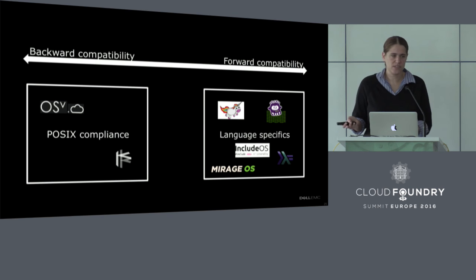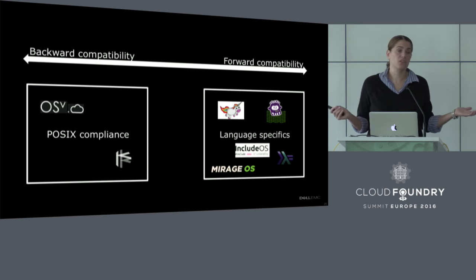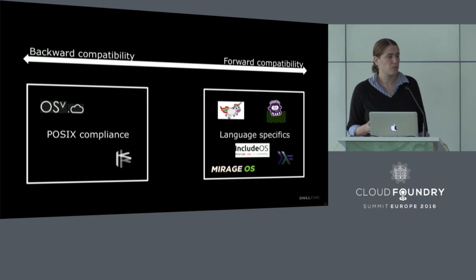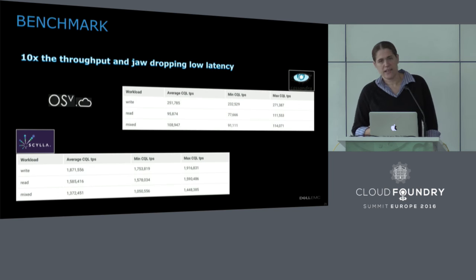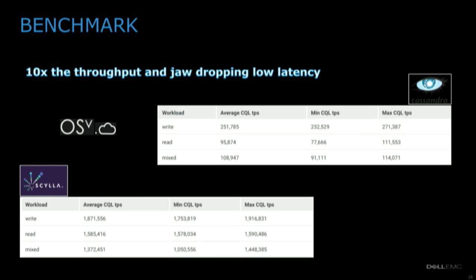For example, MirageOS — the OS from the company Docker bought — requires you to run on OCaml. Here's an example of performance: a company called Cloudius in Israel started from Unikernel and pivoted, creating a database called ScyllaDB. They took Cassandra and rewrote it on Unikernel. The result is 10 times better performance. You're actually getting 10 times better performance than running regular Cassandra.